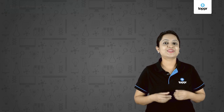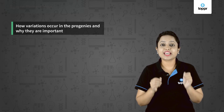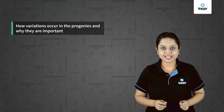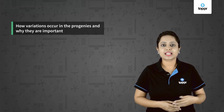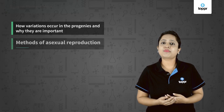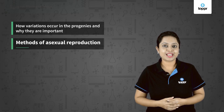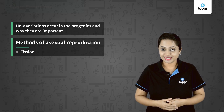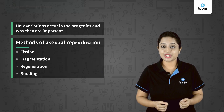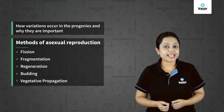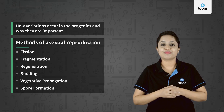So in this lesson, we learned how variations occur in the progenies and why they are important. Next, we saw the modes of asexual reproduction: fission, fragmentation, regeneration, budding, vegetative propagation, and spore formation.